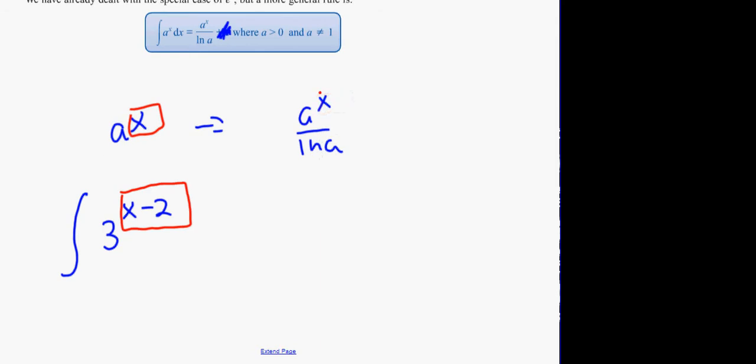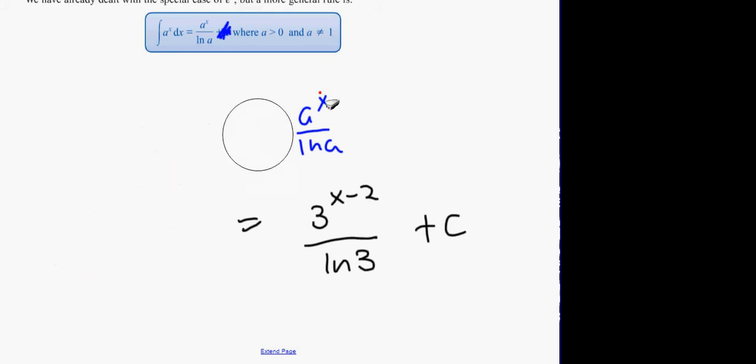And what we get here is 3 to the x minus 2, all over ln 3, plus C. You leave it like that. Just leave it like that. Or, we could have another type of question. The next type of question could be this one here, where we have a definite integral. There's no C this time, because there's a definite answer isn't there.